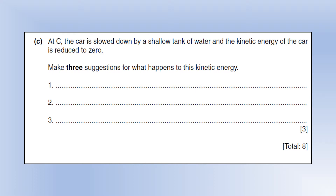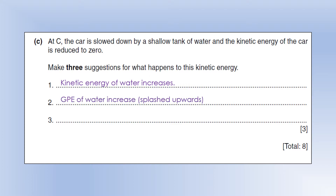At C, the car is slowed down by a shallow tank of water and the kinetic energy of the car is reduced to zero. Make three suggestions for what happens to the kinetic energy. The kinetic energy of the water increases — if it causes a splash, the water is moving, so it has kinetic energy. The water could also be splashed upwards, so it could gain GPE. And the temperature of the car itself is going to rise, because drag and friction work against it and increase its temperature, the same way friction causes your hands to warm up when you rub them together.